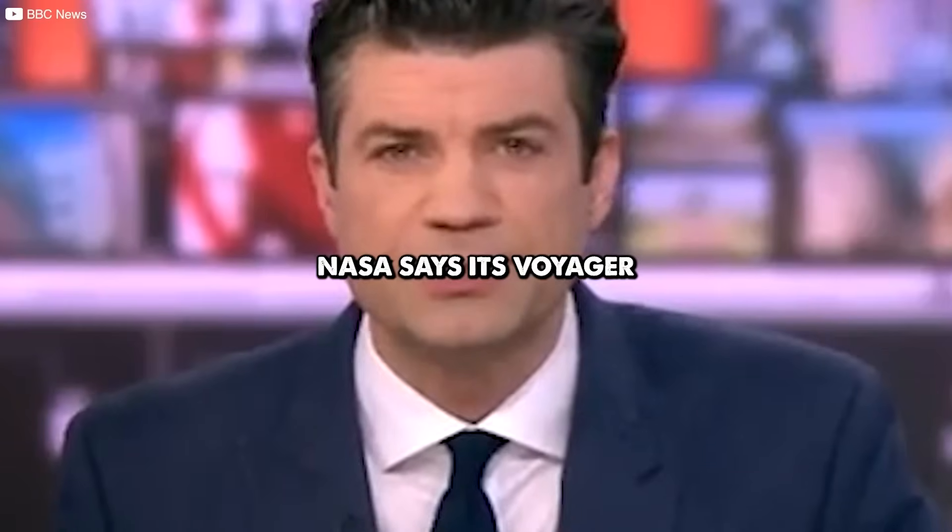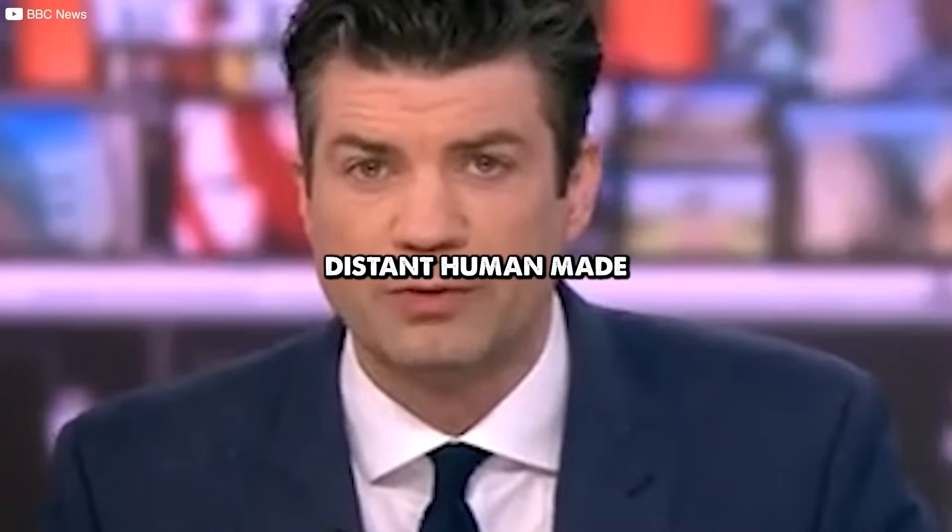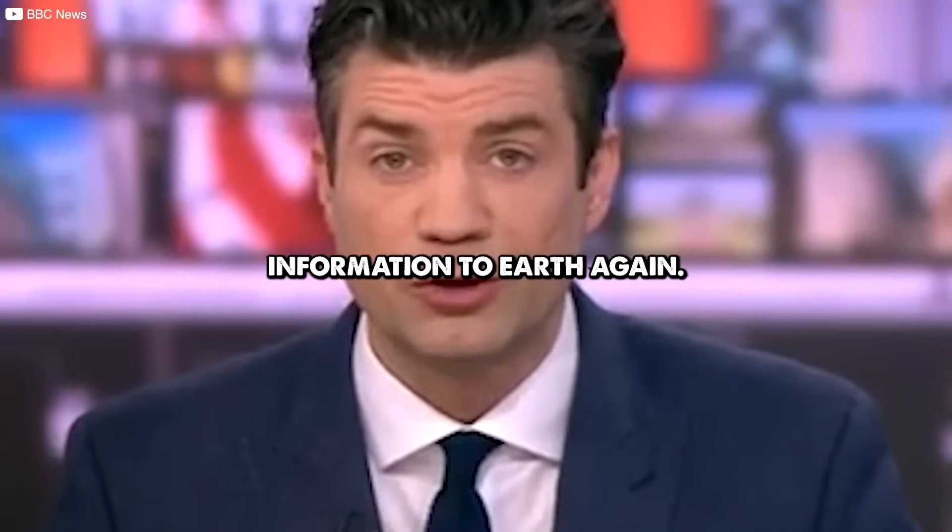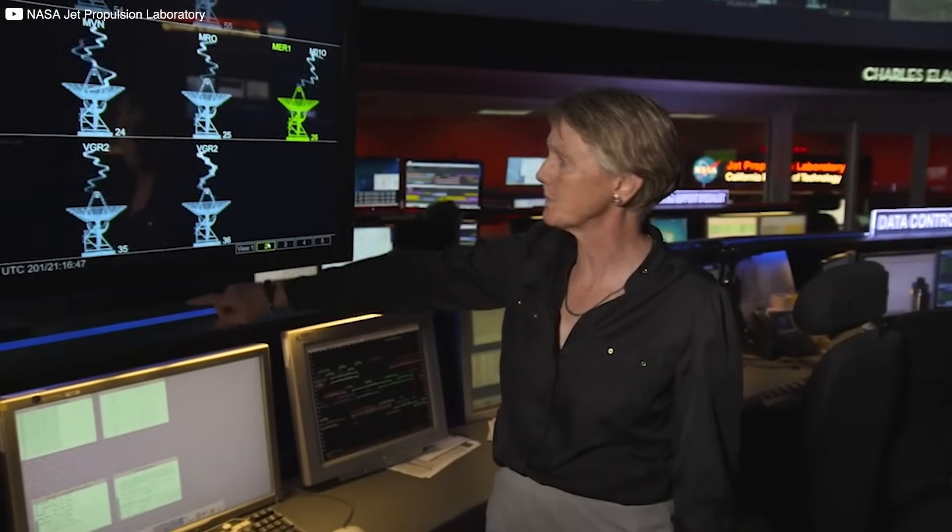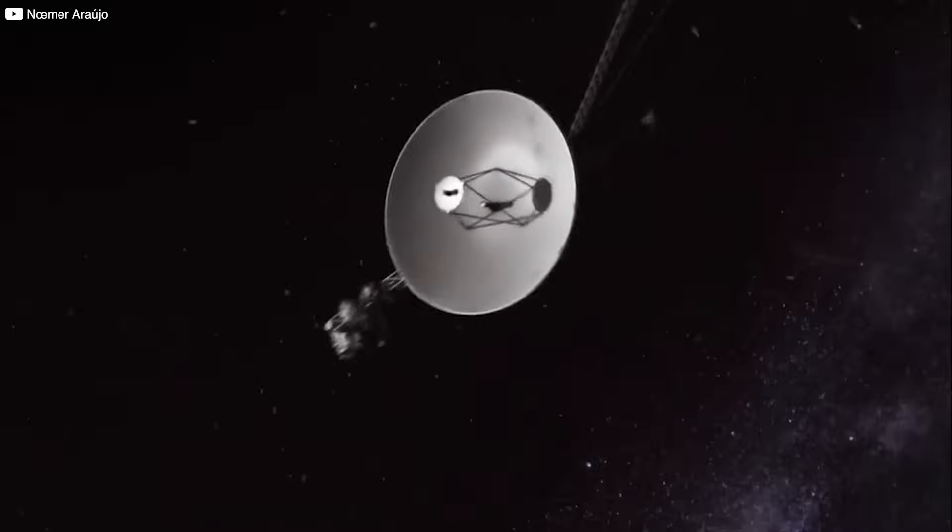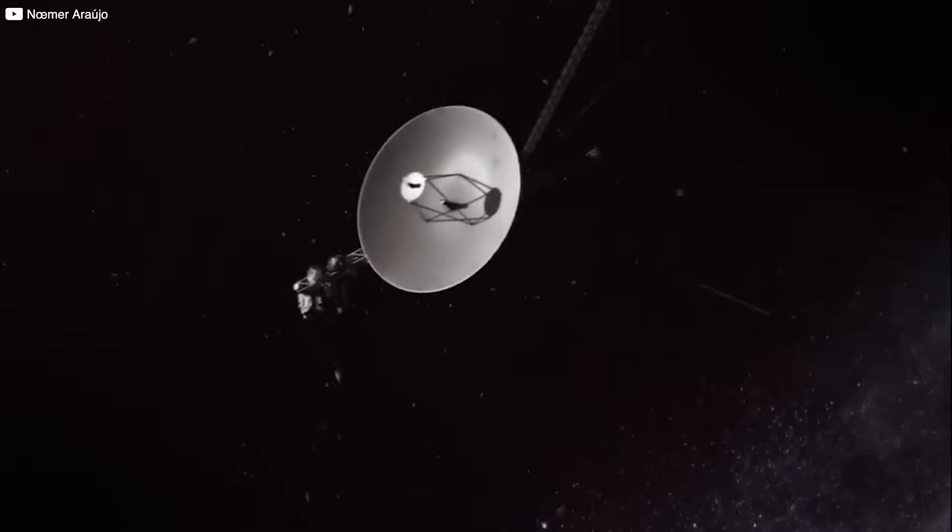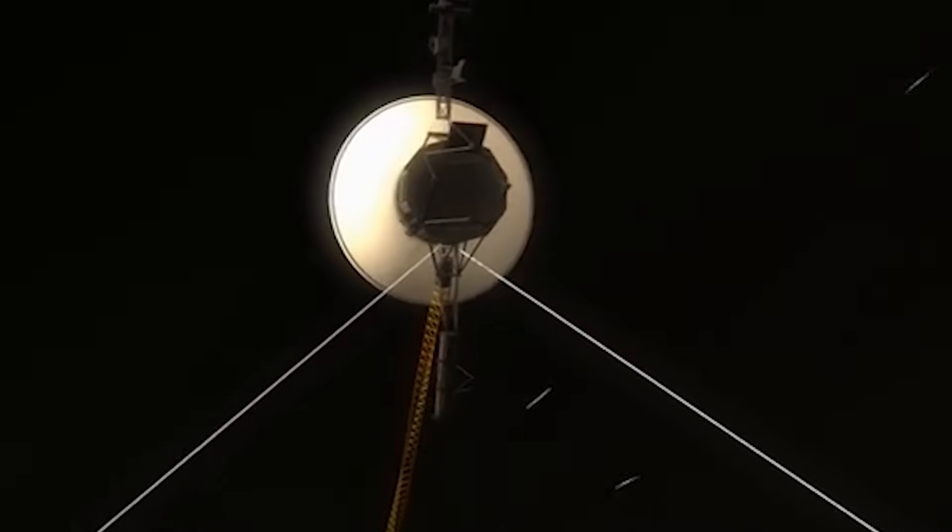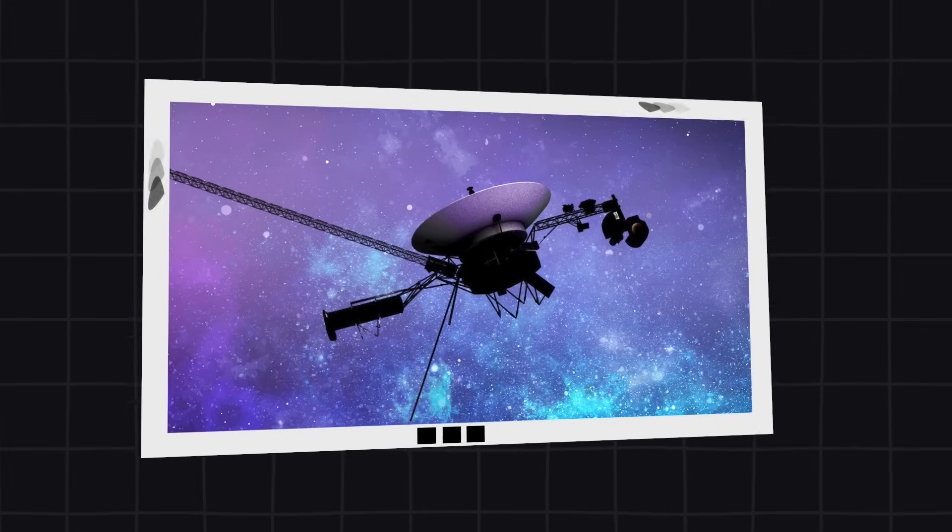NASA says its Voyager 1 probe, the most distant human-made object in the universe, is sending usable information to Earth again. This suggested a more complicated interaction between solar and interstellar fields, hinting that scientists had underestimated the complexity of this boundary. So, what has Voyager 1 found out there that's making waves now, years after crossing the heliopause? It wasn't a dramatic event or alien signal, but something far subtler.